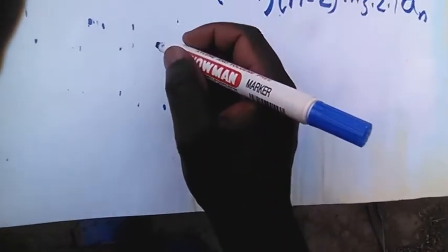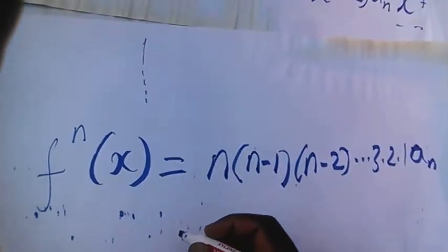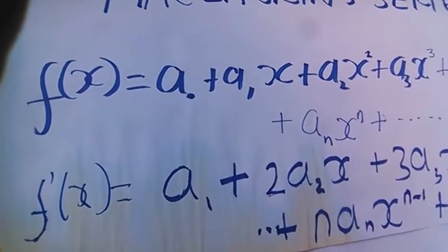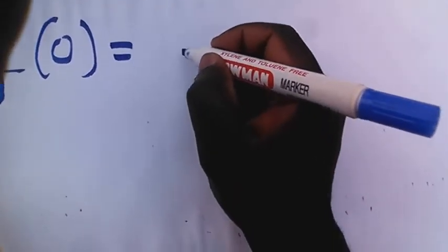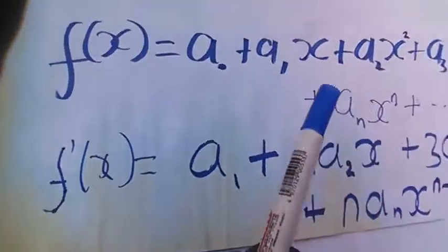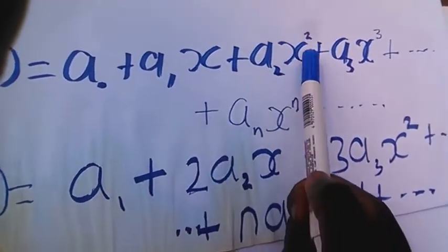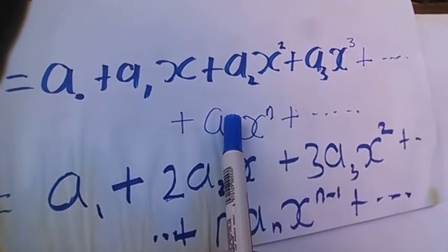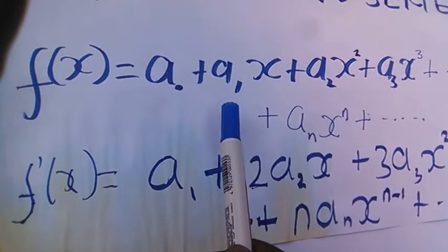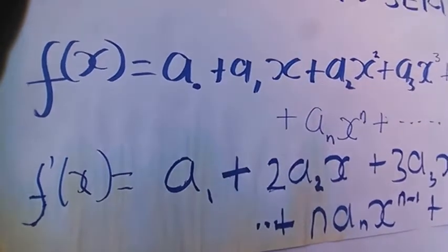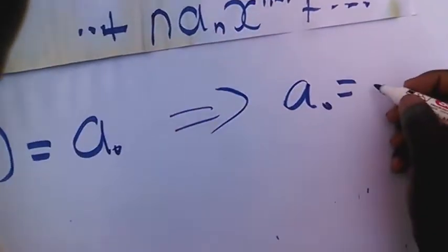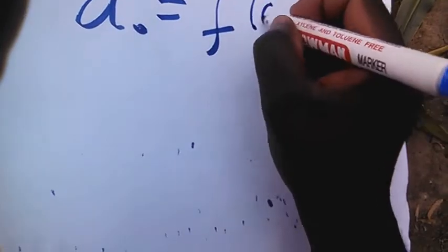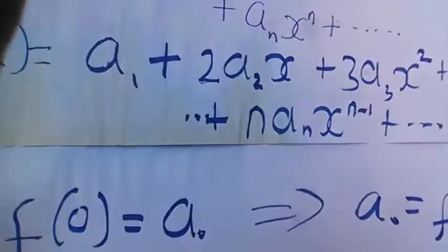So now, if we substitute x equals 0 in each of the expressions, we shall have f(0) equal to A0, because when you put 0 in here, all those terms become 0, and we remain with A0. So A0 is the same as f(0).